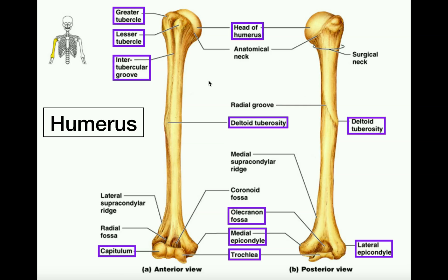Remember that the humerus is the proximal bone of your arms. It's the bone that attaches directly into the shoulder joint, and the part of the humerus that attaches into the shoulder joint itself is the head of the humerus. One of the things you need to get very familiar with finding — and this will help when we do left and right — is locating the head of the humerus.